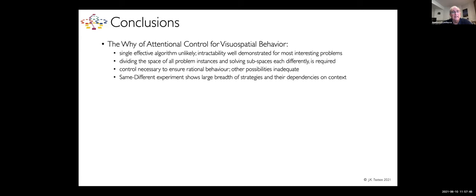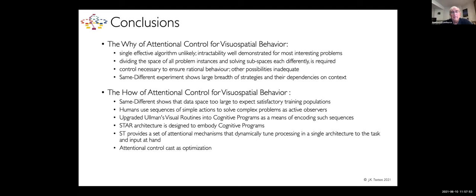As far as the how of attentional control, the same different problem shows that the data space is just too large to expect a satisfactory training population. Humans use sequences of simple actions to solve complex problems. Each one of those plays a role within a sequence, so you compose from simpler problems these sequences of complex problems. You can represent them as cognitive programs. Our STAR architecture is designed to embody these cognitive programs.